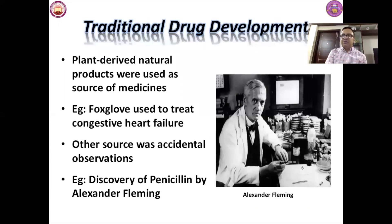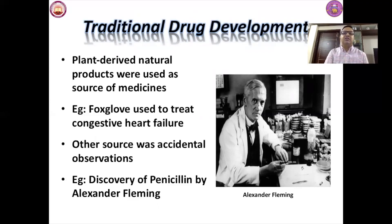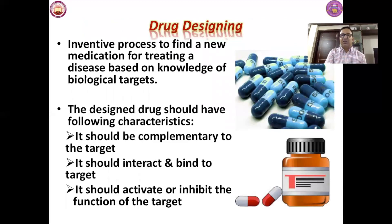Traditionally, drug development relied on plant-derived natural products as sources of medicine — for example, foxglove used to treat congestive heart conditions. Other sources included accidental observations, such as the discovery of penicillin by Alexander Fleming. Now we move to drug design in the present day, especially using in silico techniques.